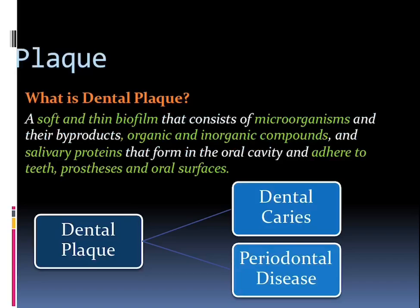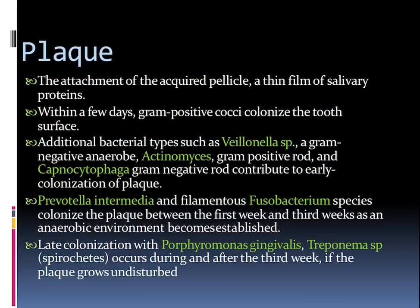The dental plaque can have its fate, which creates either dental caries or may lead to periodontal disease. This attachment of the acquired pellicle by a thin film of salivary proteins occurs within some days, and initially it is colonized by gram-positive cocci and then bacteria like Veillonella, gram-negative anaerobic Actinomyces species. Gram-positive rods and certain Capnocytophaga species contribute to the early colonization of plaque.